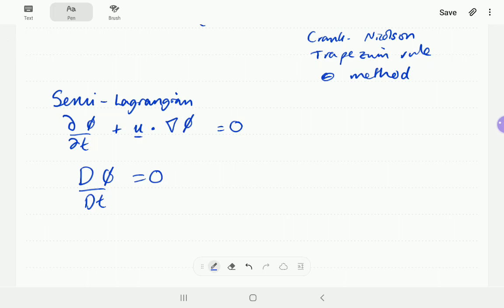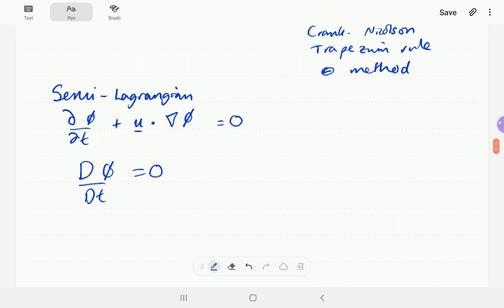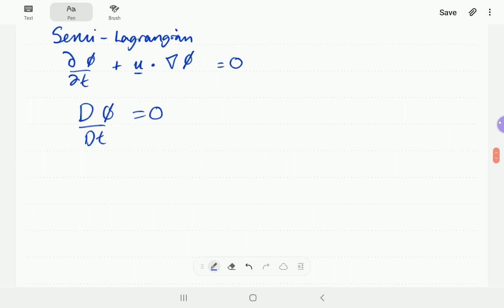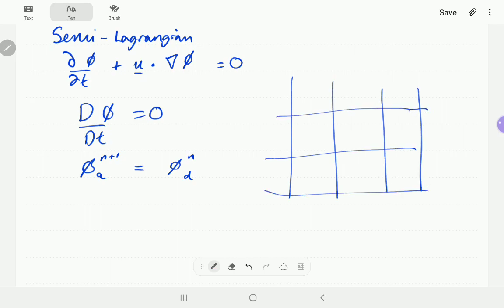And so if you're just doing linear advection, you'd use the analytical solution of the advection equation. And you'd say that phi at time level n at the arrival point is just equal to phi time level n plus 1 at the departure point. So if you have a grid like this, you don't really take volumes or areas into account in semi-Lagrangian. So this is your arrival point, phi arrives here,